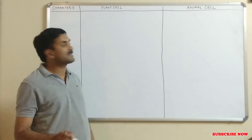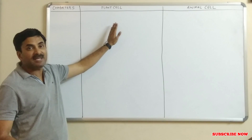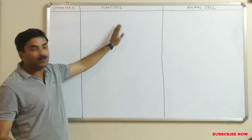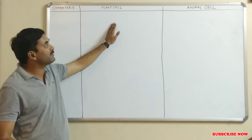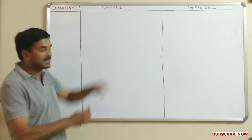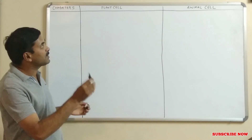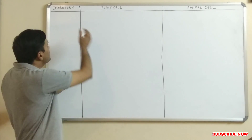Today we will be discussing the plant cell and the animal cell. We are going to differentiate between the plant cell and the animal cell. The very first difference between them is as follows.